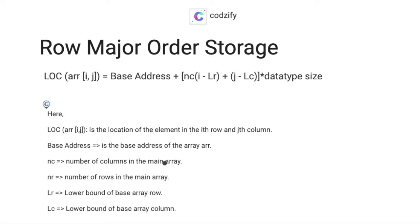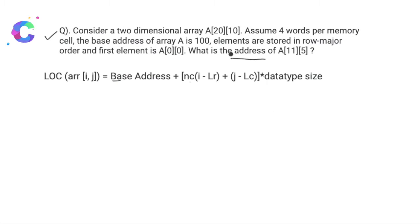NC is the number of columns in the main array. I is the i-th row location, j is the j-th column. LR and LC denote the lower bound of the array row and lower bound of the array column respectively. The formula also includes the data type size.